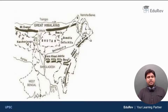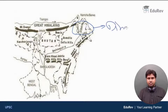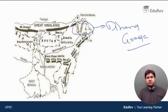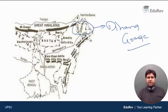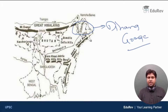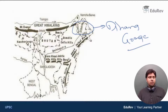Looking at the map: this is the Great Himalayan Range and this is the Dihang Gorge. They have taken a southward bend here — this is the Syntaxial Bend. Here you have the Patkai Bum Range, then the Naga Hill Range, Manipur Hill Range, and Mizo Hill Range. And to the west, you also have the hills of Garo, Khasi, and Jaintia. All these belong to the Eastern Hills or Purwanchal.